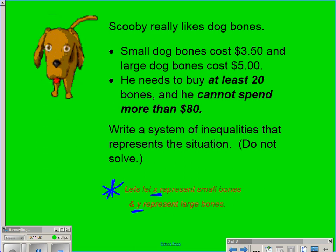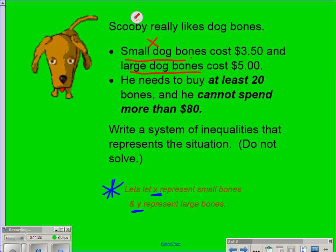So what we're going to do is we're going to let X represent small bones and Y represent large bones. And based on that for X and Y, we're going to set us up a system of inequalities based on the information I gave you in the bullets. So here's the scenario. Scooby really likes dog bones. Small dog bones cost $3.50 and large dog bones cost $5.00.